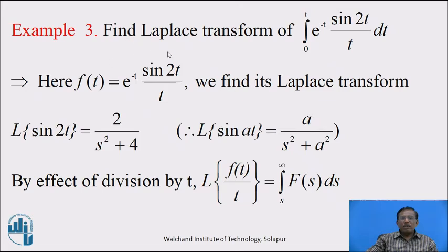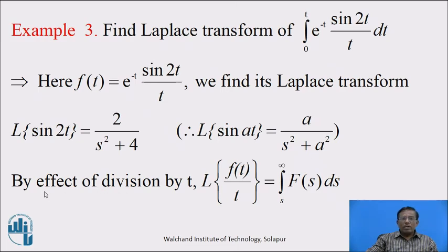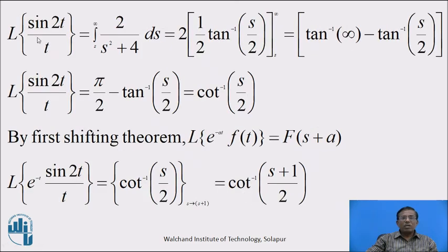Example 3: find the Laplace transform of integration with limit 0 to t of e raised to minus t sin 2t upon t dt. Here f of t is e raised to minus t into sin 2t upon t. First, we find Laplace transform of sin 2t, which equals 2 upon s square plus 4, using Laplace of sin at equal to a upon s square plus a square. By the effect of division by t property, Laplace of f of t upon t equals integration with limit s to infinity of F of s ds. So Laplace of sin 2t upon t equals integration with limit s to infinity of 2 upon s square plus 4 ds.